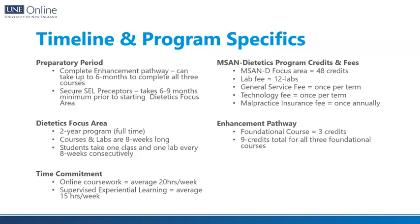The MS in Applied Nutrition and Dietetics program is 48 credits. There are additional lab, general service, technology, and malpractice insurance fees. You can find all current cost information on our website or through the financial aid office. If you end up completing the enhancement pathway, each foundational course is three credits — nine credits in total for all three. Current tuition cost information is also available on our website or through the financial aid office.